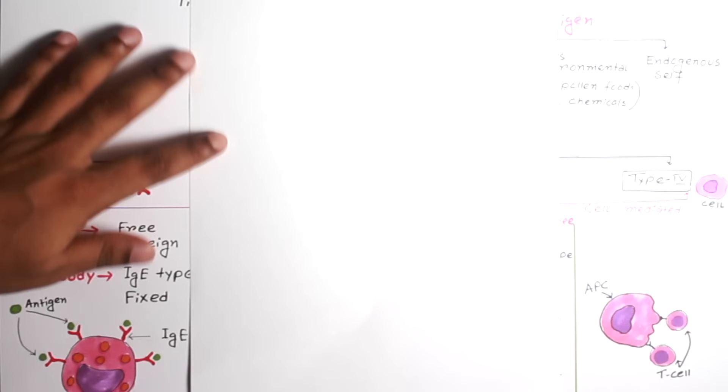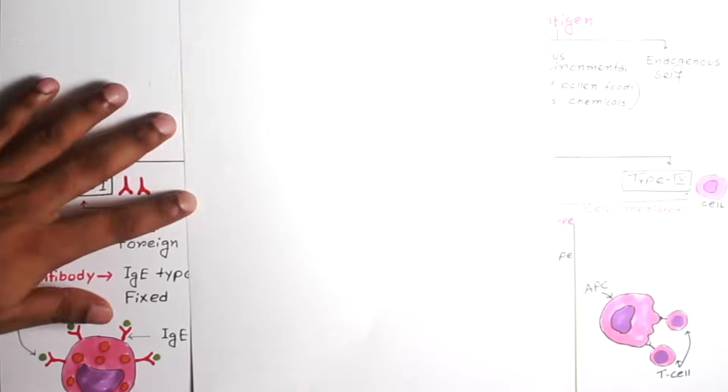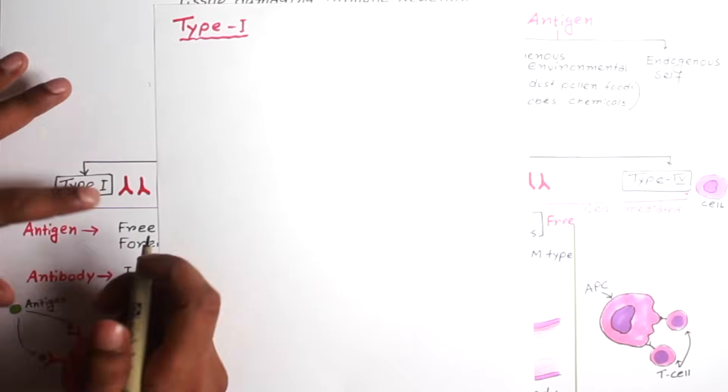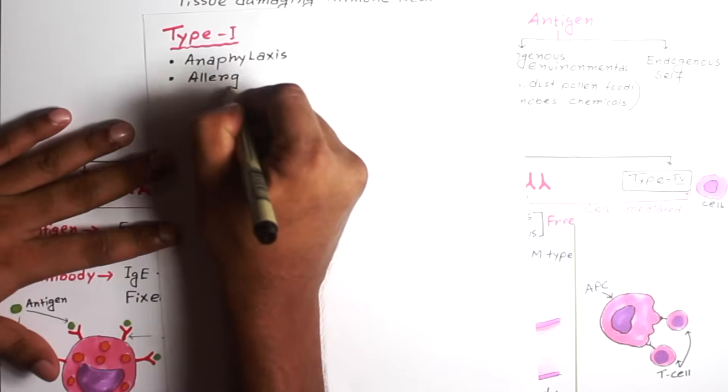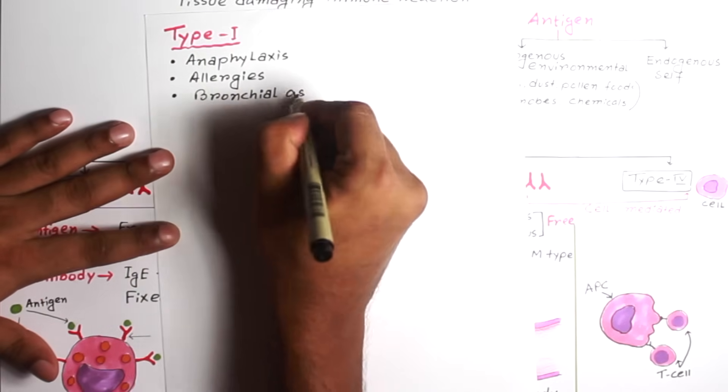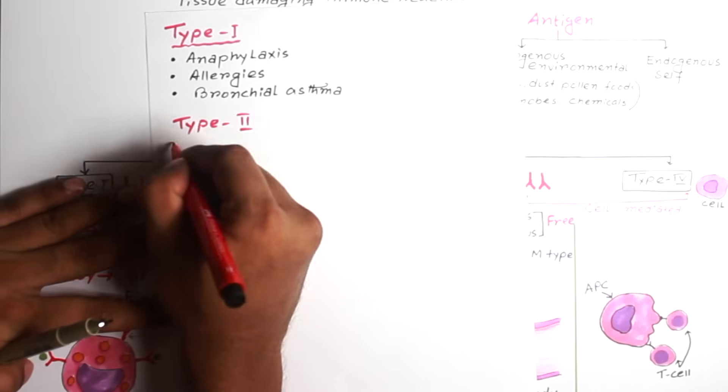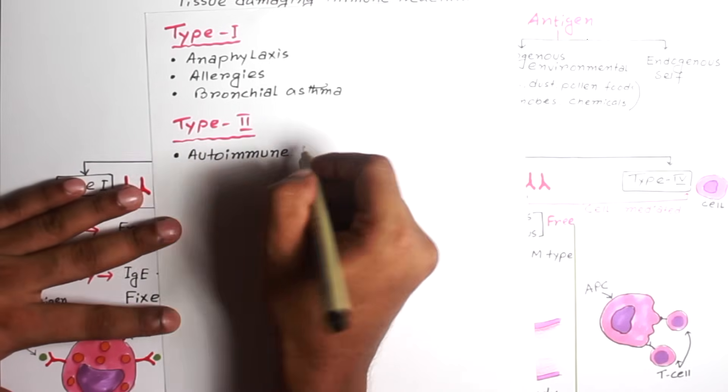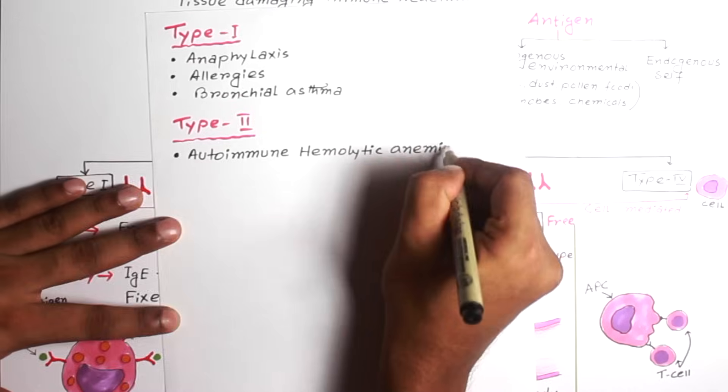Now I would like to mention some important hypersensitivity reactions. Type 1 hypersensitivity reactions are anaphylaxis, allergies and bronchial asthma. And Type 2 hypersensitivity reactions are autoimmune hemolytic anemia and Goodpasture syndrome.